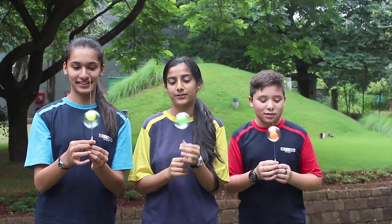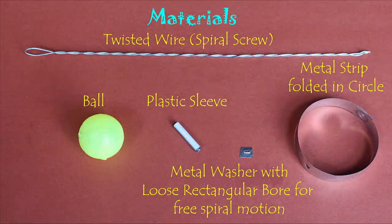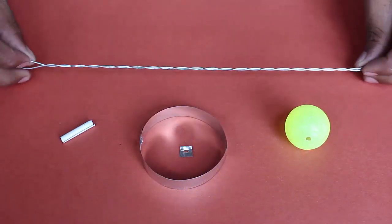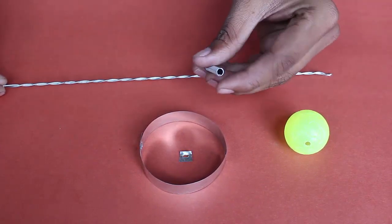This is a traditional Indian toy. It can still be found in villages but not in cities. However, you can easily make this toy. You need a twisted double wire, a plastic ball, a sleeve, a washer, a metal strip, and a hoop.